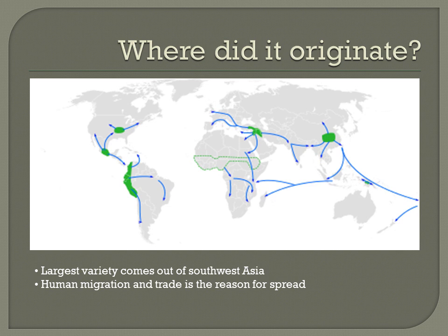Where did animal agriculture originate? Animal agriculture had a large portion of it start in Southwest Asia with sheep, goats, pigs, dogs, and cattle. As well as in Southeast Asia, it has chickens and cattle. South America has llamas and alpacas, where in North America, turkeys.